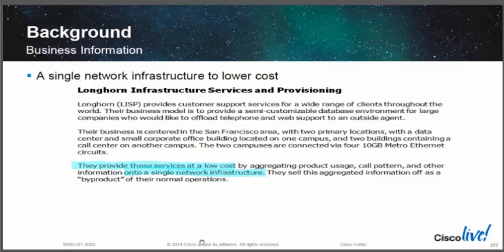They have a single agent answer calls for multiple companies. The idea is you'd call a 1-800 number, and the number you called would actually trigger a pop-up on the agent's screen saying 'you're answering the call for so-and-so, here's the company information.' All of this would be automated, and the customer service rep would actually act as though they work for that company — so the caller wouldn't know the difference. I actually worked in a call center similar to this.